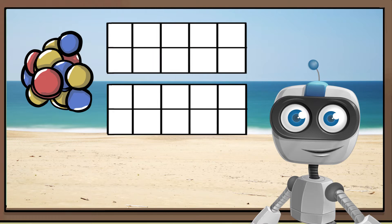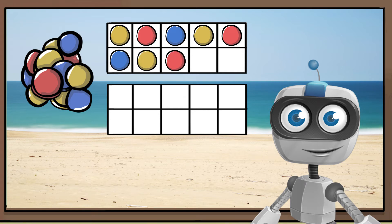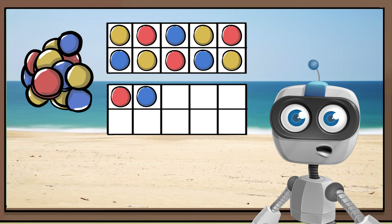This time, we're going to build 12 on our 10 frame. Count with me while I build this number. 1, 2, 3, 4, 5, 6, 7, 8, 9, 10, 11, 12. We needed two 10 frames because our number was bigger than 10.